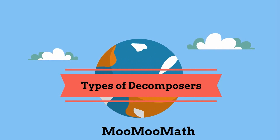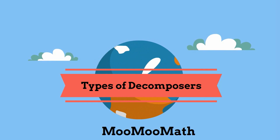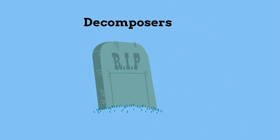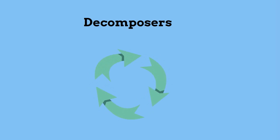Welcome to MooMooMath and Types of Decomposers. In this video we will look at several types of decomposers. A decomposer is an organism that breaks down dead or decaying organisms. Decomposers help recycle matter in an ecosystem by breaking down decaying or dead organisms. Take a look at this banana.